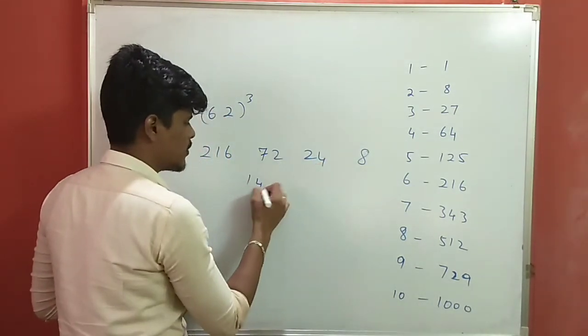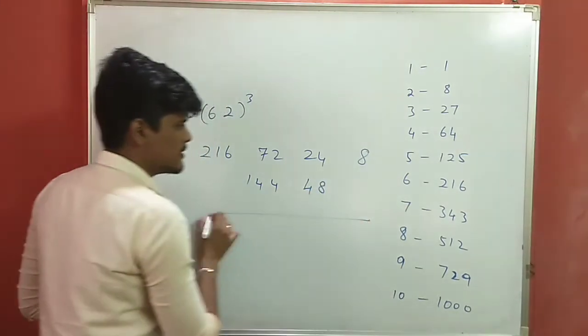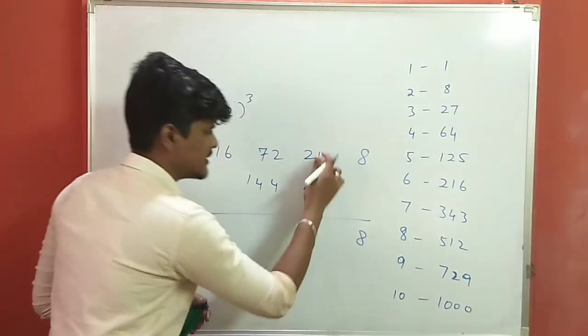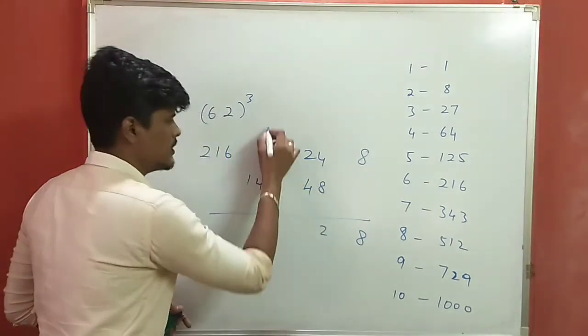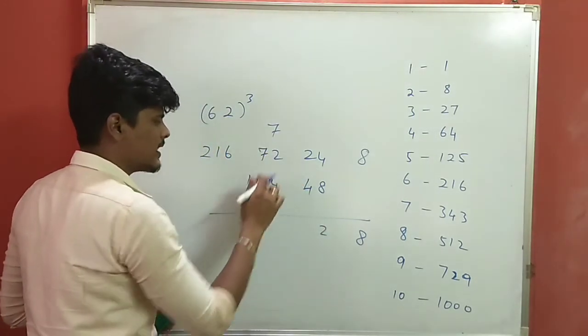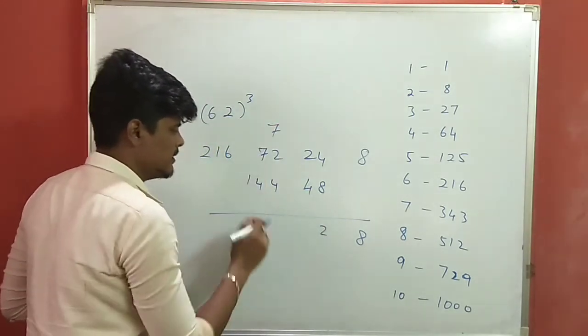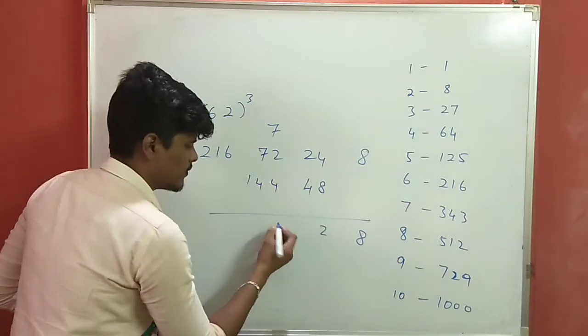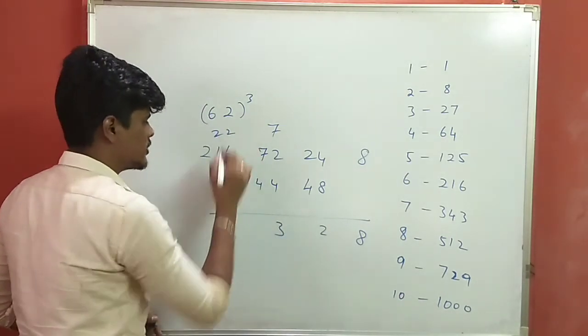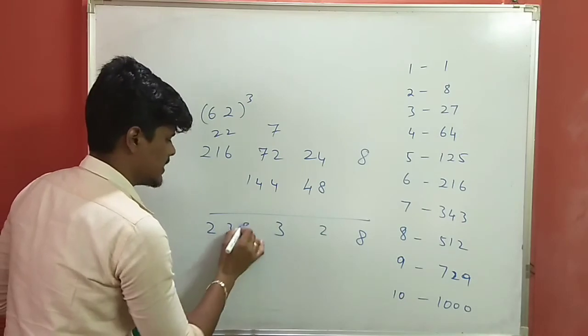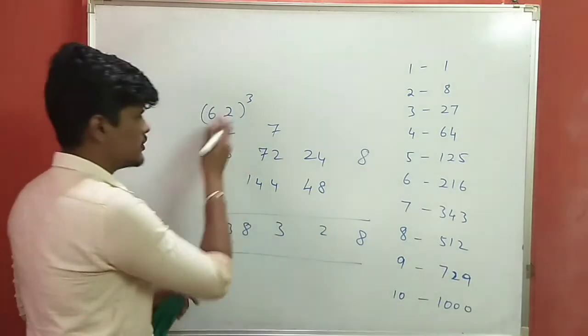2 square is 4 into 6 is 24. So, if you double it, it's 144, if you double it, it's 48. So, let's add: 8, we add 72 to get 216, then 223, then 238. So, this is the cube.